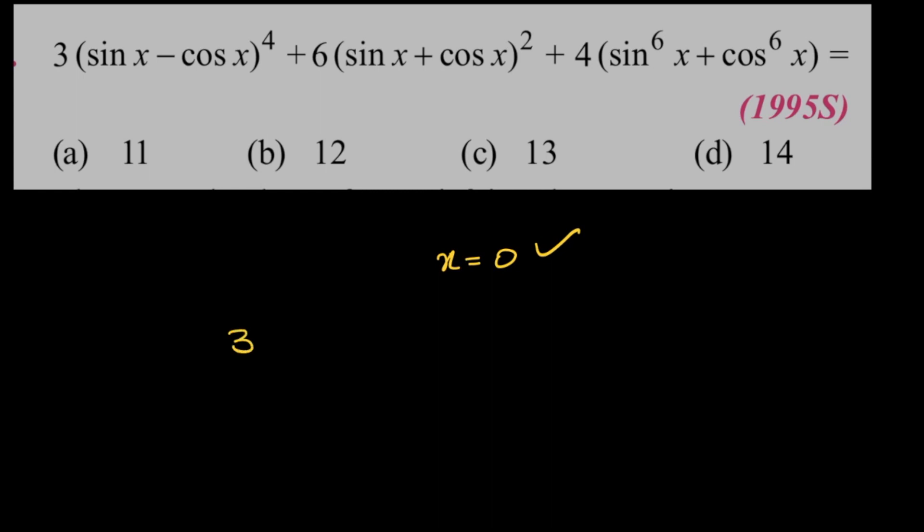When you put x is equal to 0 the answer is going to be 3 times 0 minus 1 whole power 4 plus 6 times 0 plus 1 whole square plus 4 times 0 plus 1. So the answer is 3 plus 6 plus 4 which is 13.